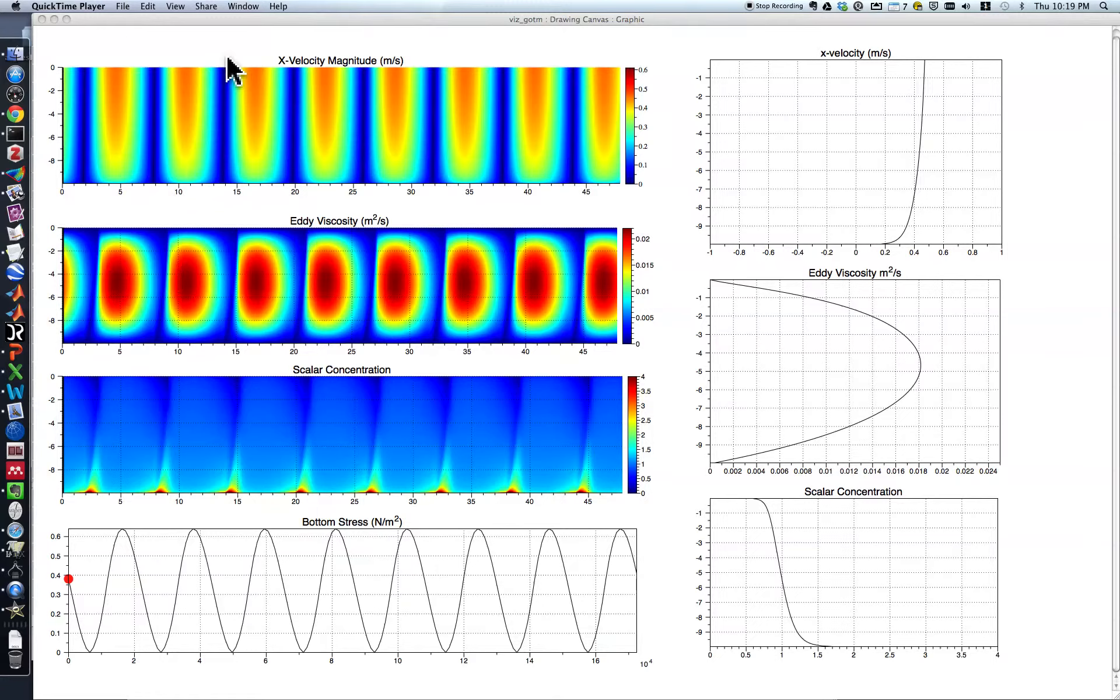From the General Ocean Turbulence model I made, I configured it to examine the bottom boundary layer. Essentially, the General Ocean Turbulence model is a 1D oceanographic model. It's a vertical water column model to examine turbulence and other processes in the vertical. It actually provides the vertical turbulence and mixing for many ocean models. In this case, I took their estuary test case and modified it a bit.